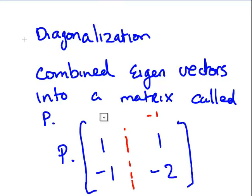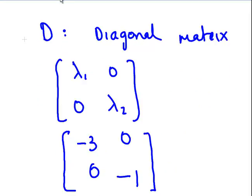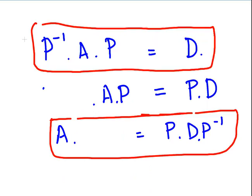There's also a matrix D, which is based on the eigenvalues. We have two eigenvalues, minus 3 and minus 1, placed on the diagonal, and the off-diagonal elements are zeros. That's where we are so far.